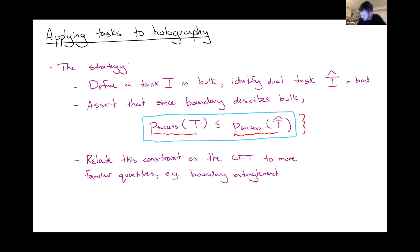We then think of this inequality as a constraint on the CFT or boundary theory. In the examples I'll show, we'll be able to turn this lower bound on success probability into a lower bound on entanglement.